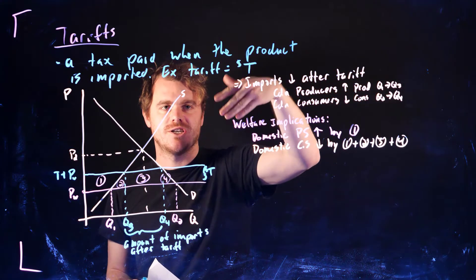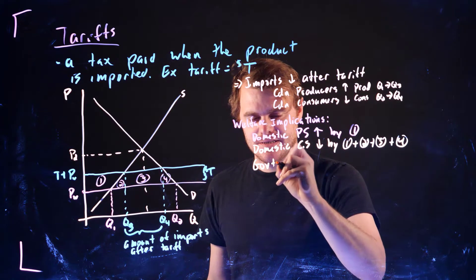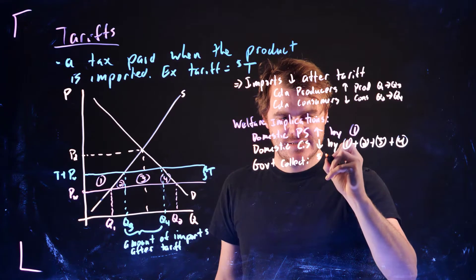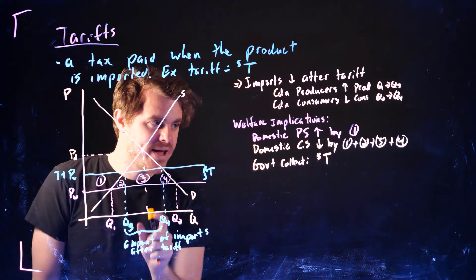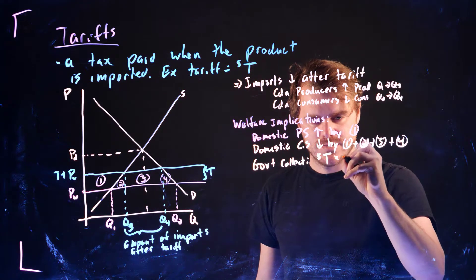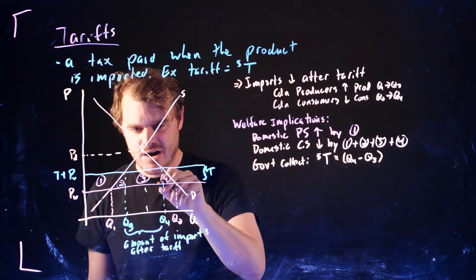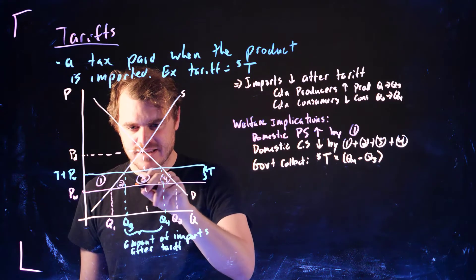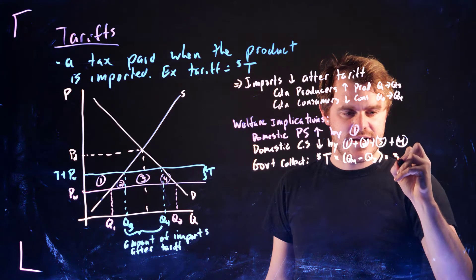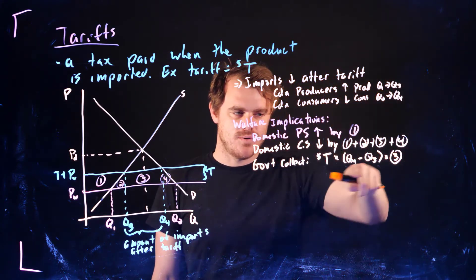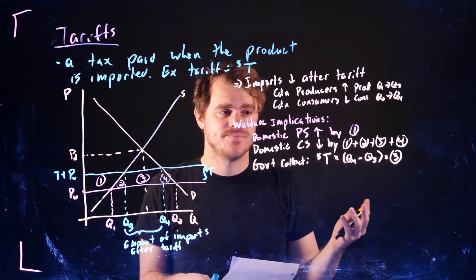There's one more thing happening: the government is charging T dollars on every import brought in. Now the amount of imports is Q4 minus Q3, and that tax corresponds to the rectangle we've labeled area three — that's the government revenue from this tariff.